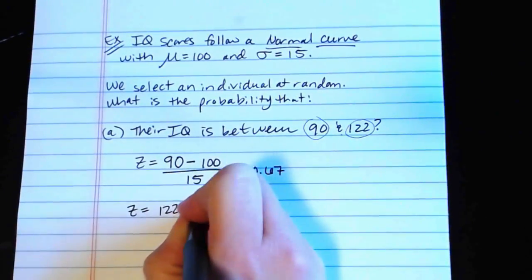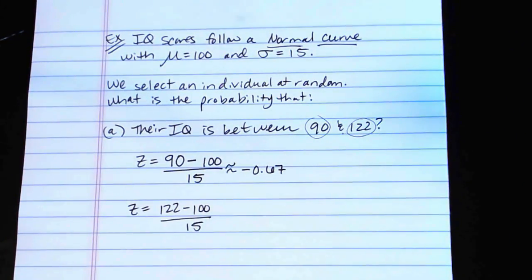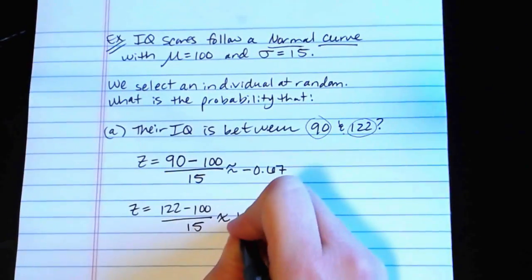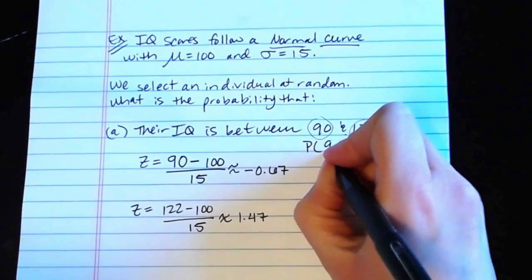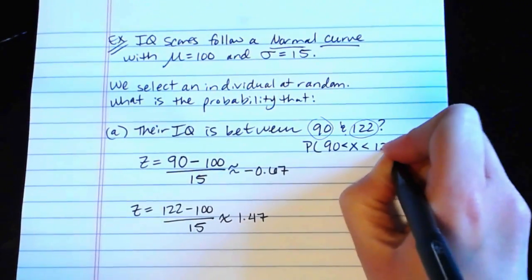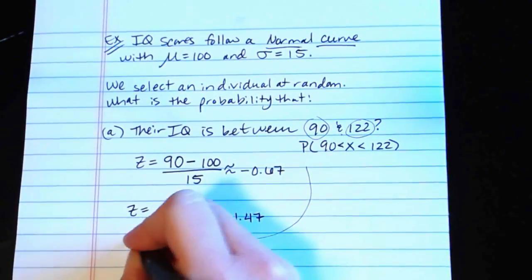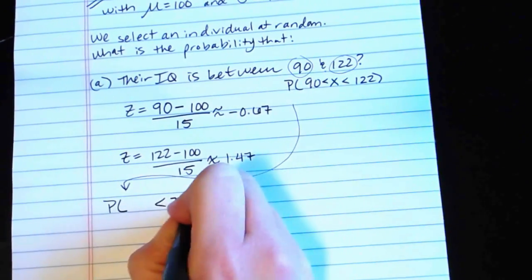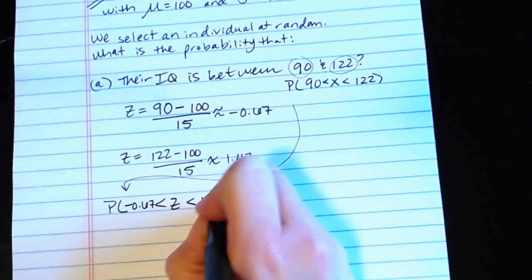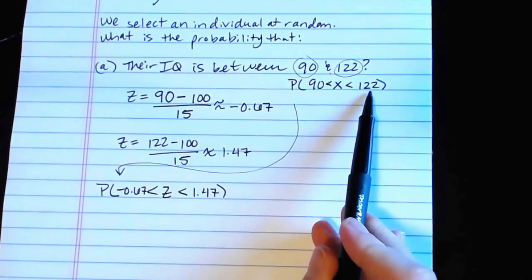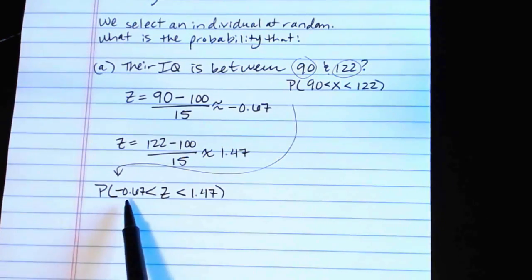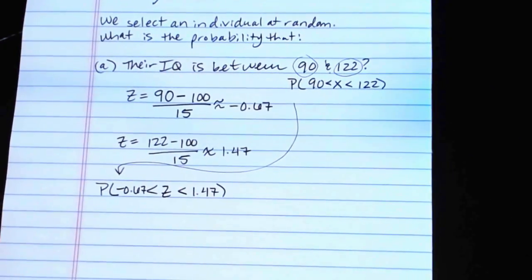We also need to convert the value of 122. So 122 minus 100 divided by 15. And when we do that, we get 1.46 repeating, so approximately 1.47. And so this original statement asking for the probability that the x value is between 90 and 122, in z score format, what that looks like is asking for the probability that z is between negative 0.67 and 1.47. Okay, it's the exact same statement, it's just here it is in terms of raw scores, an IQ between 90 and 122. In terms of standard scores, we're talking about being negative 0.67 away from the mean in terms of standard deviation, and 1.47 away from the mean.